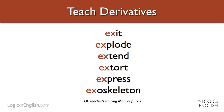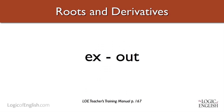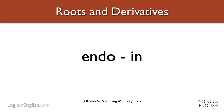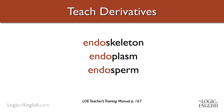Then we look at the prefix 'ex' — which means out, as in exit, or something that explodes moves outward, or if we extend something, we put it out. So exothermic means the heat is moving out. 'Endo,' on the other hand, means in — this is less common, but in biology, an endoskeleton is a skeleton on the inside, in contrast to an exoskeleton, which is on the outside. When we draw these connections, students have a lot less memory work to do and they really begin to understand.